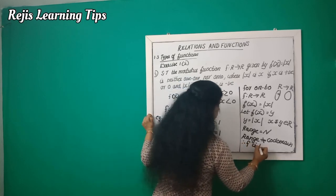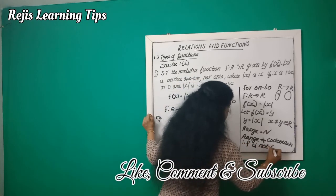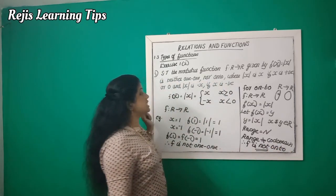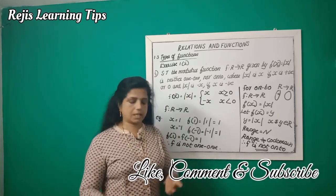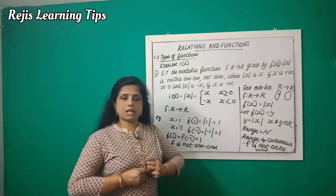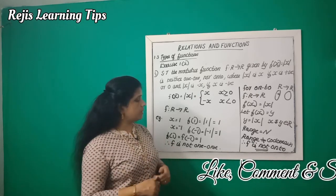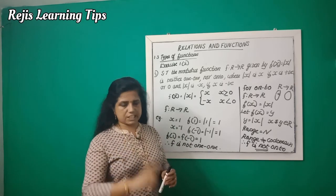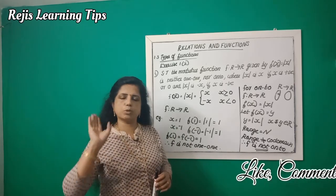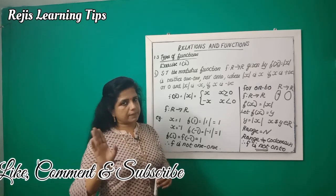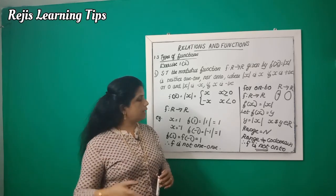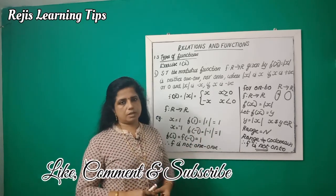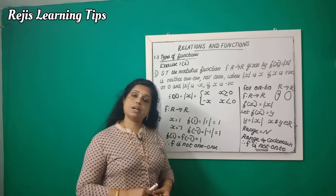Therefore, our function is not onto. The range of the modulus function contains only non-negative values, while the codomain is R. Since range is not equal to codomain, f is not onto.